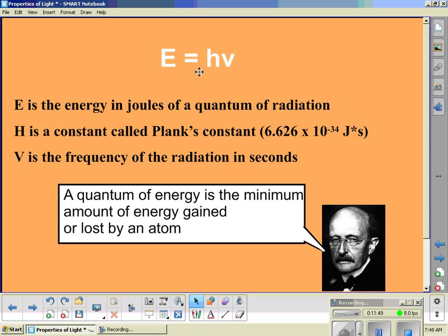So here we still have the same equation. Energy is measured in joules and it's of a quantum of radiation, a little packet of radiation. H is a constant called Planck's constant, and this never changes. 6.626 times 10 to the negative 34 joule seconds. Yes, those are weird units. Don't get hung up on those. V, again, same as last equation, is the frequency of the radiation in seconds.